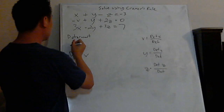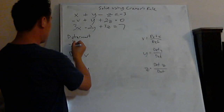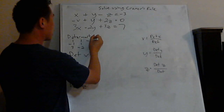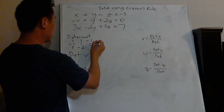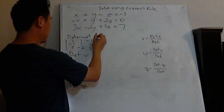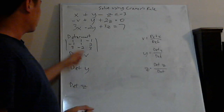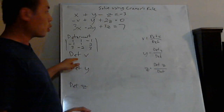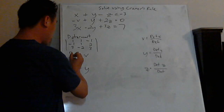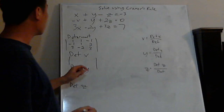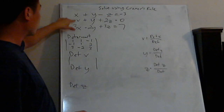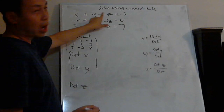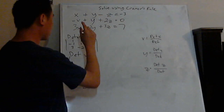For the main determinant matrix, we have: 1, negative 1, 3 / 1, 1, negative 2 / negative 1, 2, 3. Now for determinant x — watch what I do — I leave the x column blank and just copy the y's and z's. So you have: 1, 1, negative 2 / negative 1, 2, 3.